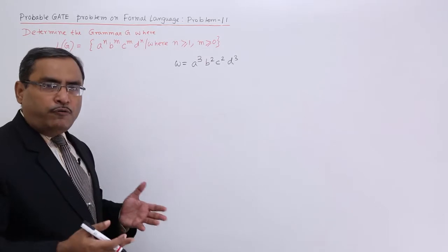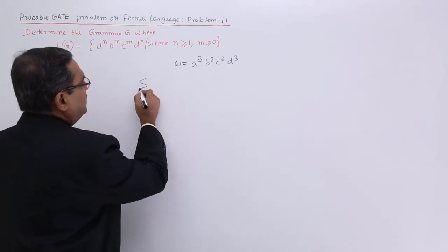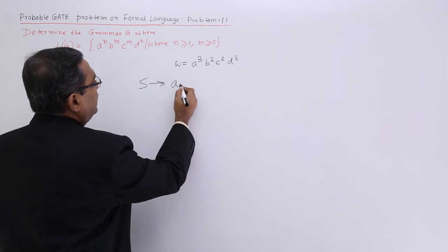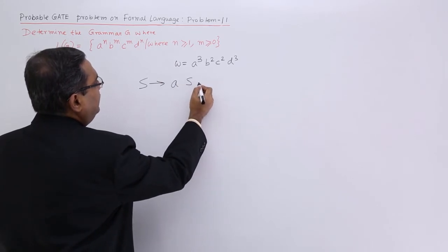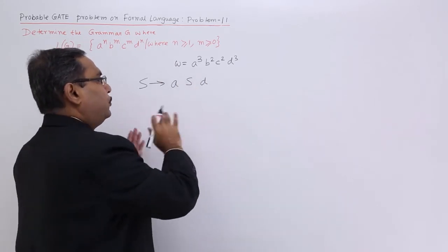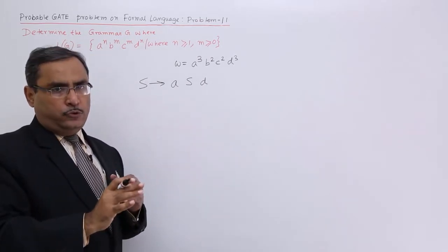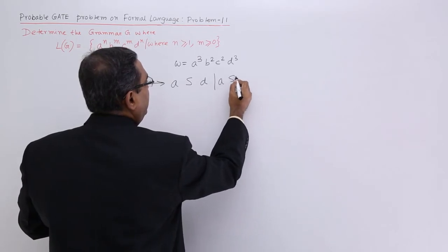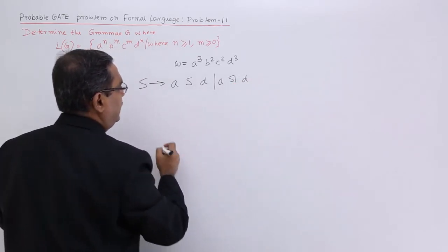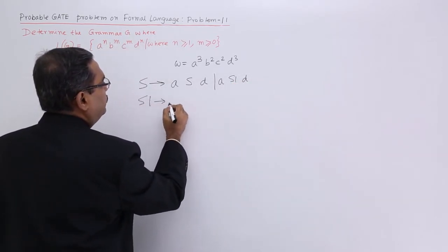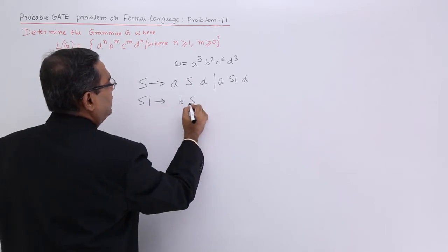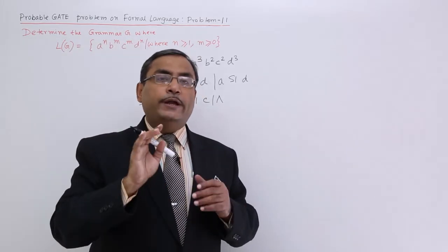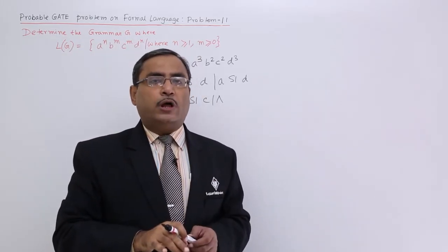It is my opinion, you can go for other production rules. It is my opinion is that you can go for S produces aSd, so that always you can produce same number of a and d. Otherwise you can go to aS1d and S1 will be responsible to produce b and c or epsilon. This is the way to write this particular productions.